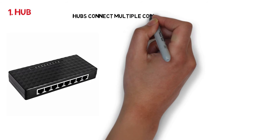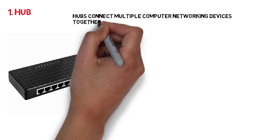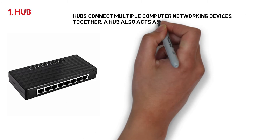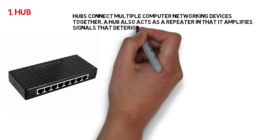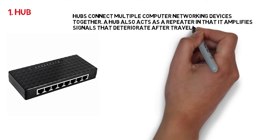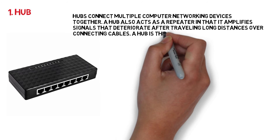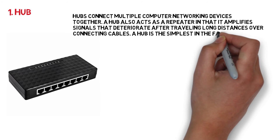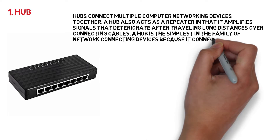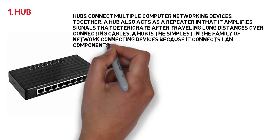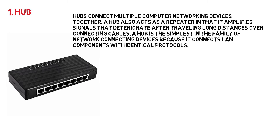1. Hub. Hubs connect multiple computer networking devices together. A hub also acts as a repeater in that it amplifies signals that deteriorate after traveling long distances over connecting cables. A hub is the simplest in the family of network connecting devices because it connects LAN components with identical protocols.